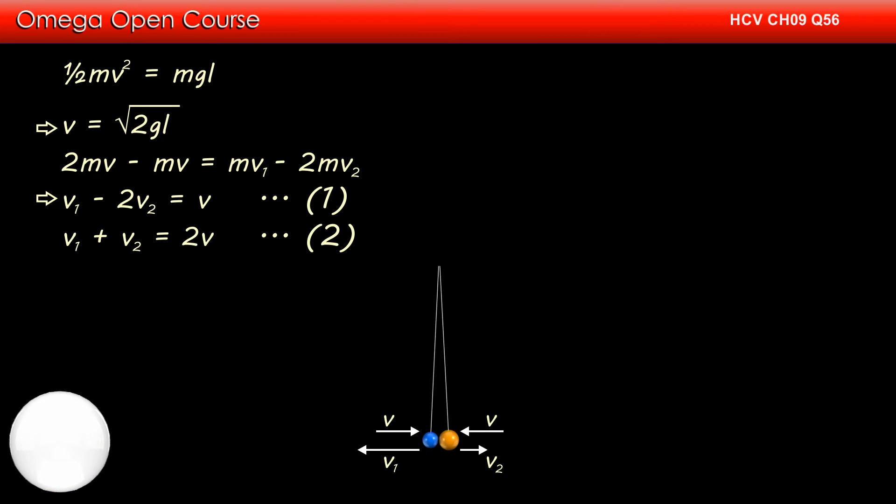Multiplying equation 2 by 2 and adding it to equation 1, we get 3v1 is equal to 5v. This implies v1 is equal to 5 by 3 v, but v is equal to root 2gl. Therefore, v1 is equal to 5 by 3 into root 2gl or root 50gl by 3.